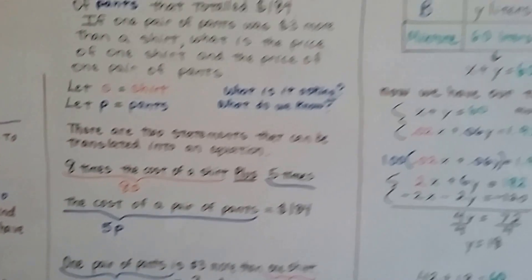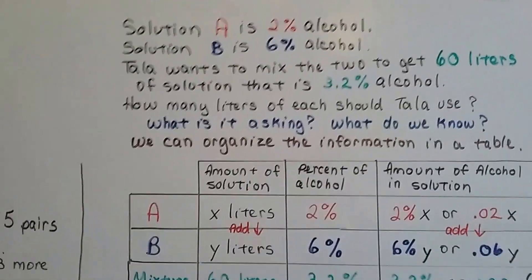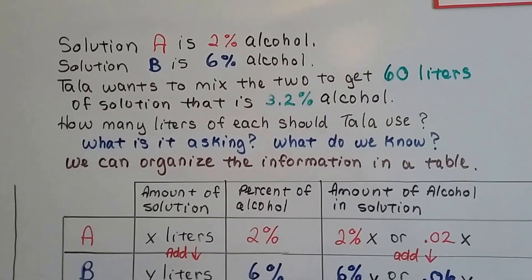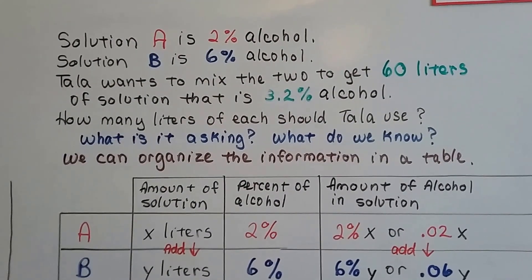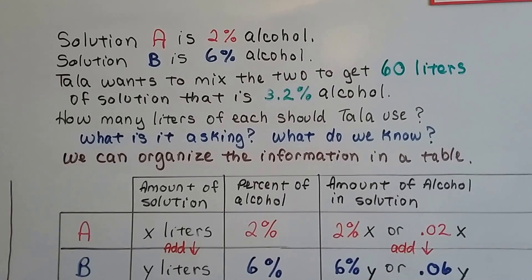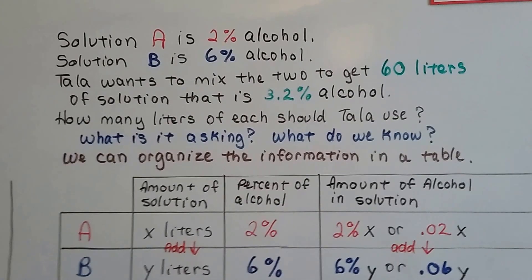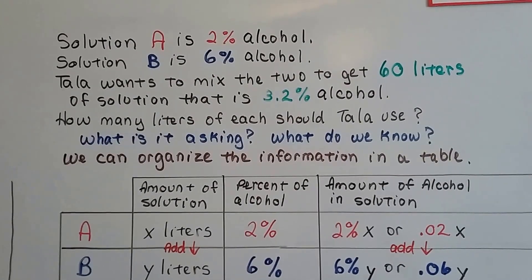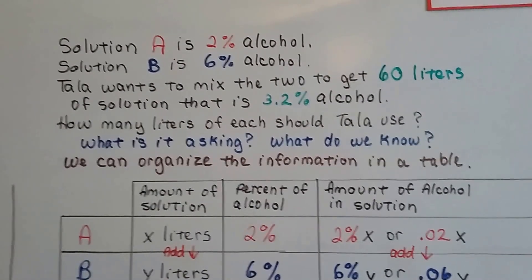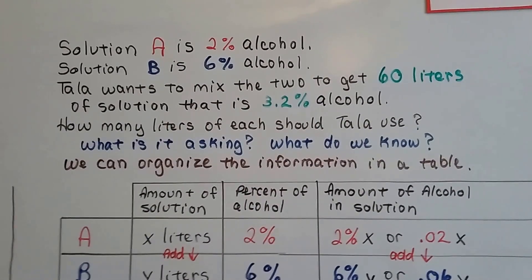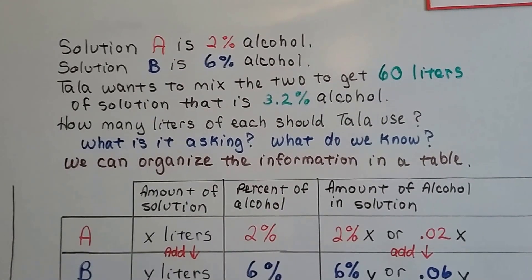Now, this one is a little bit more difficult. You're going to come across a lot of these solution problems. These mixture problems, I should say. Solution A is 2% alcohol. Solution B is 6% alcohol. And, Tala wants to mix the two to get 60 liters of solution that is 3.2% alcohol. That sounds crazy, doesn't it? How are we going to solve that? It's very easy. We just make a table.